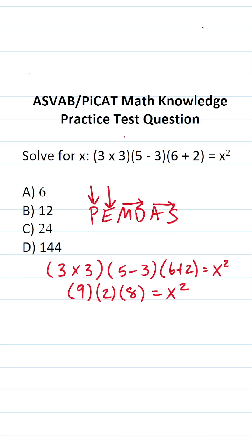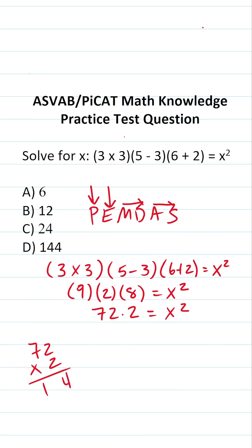9 times 8 — if you can't do that mentally, you can always use your hands — is going to be 72. So 72 times 2 equals x squared. Working that out: 2 times 2 is 4, 7 times 2 is 14, so this becomes 144 equals x squared.